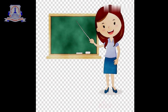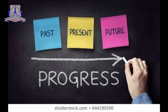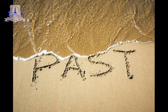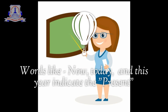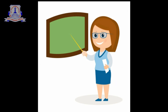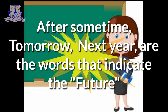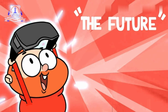Now let us see which words indicate the past, present, and the future. The words like 'some time ago', 'yesterday', and 'last year' are the terms that indicate the past. The words like 'now', 'today', and 'this year' are the terms that indicate the present. The words 'after some time', 'tomorrow', and 'next year' are the words that indicate the future.